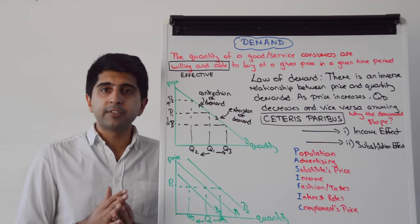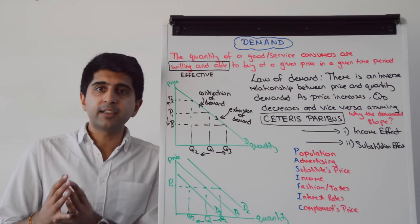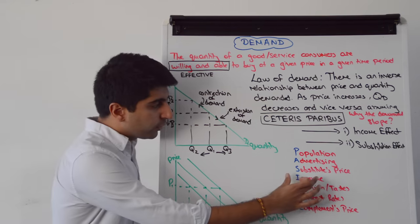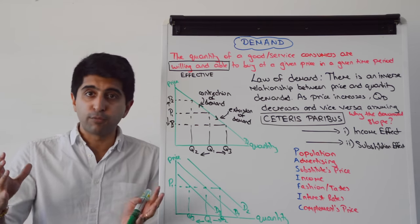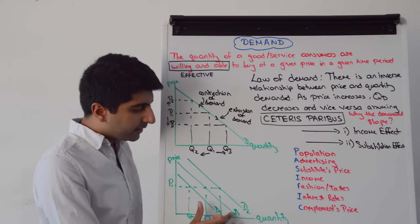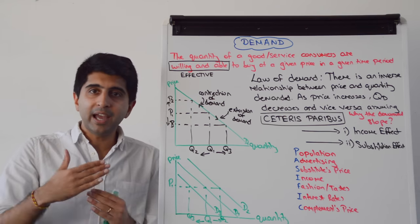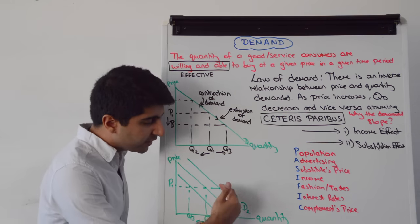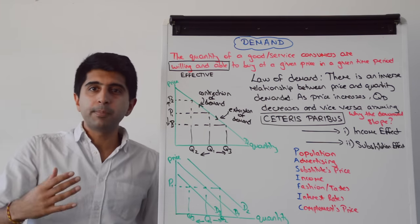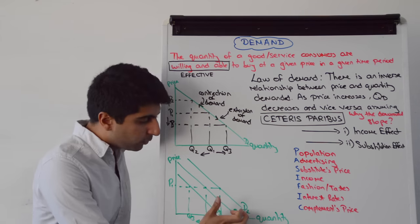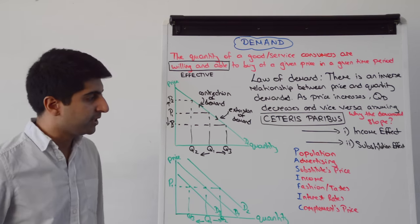Substitute's price — a substitute is a rival good in competition with something else. Classic example: Coke and Pepsi. If the price of Pepsi goes up, more people are willing and able to buy Coke instead, shifting the demand curve for Coke from D1 to D2. Whereas if the price of Pepsi goes down, less people buy Coke, decreasing demand and shifting the curve to the left from D1 to D3.